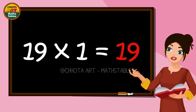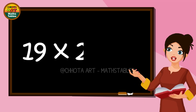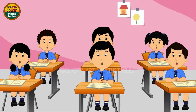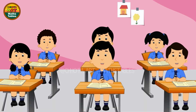19 ones are 19. 19 twos are 38. 19 threes are 57.